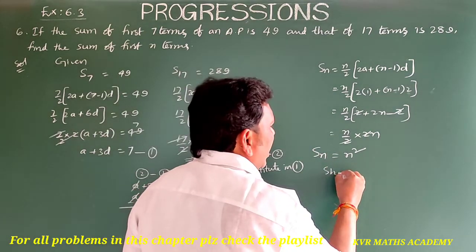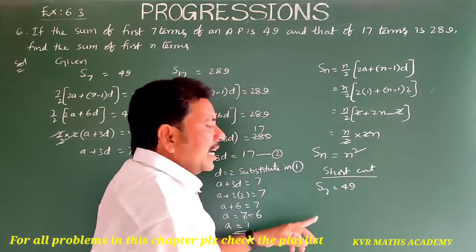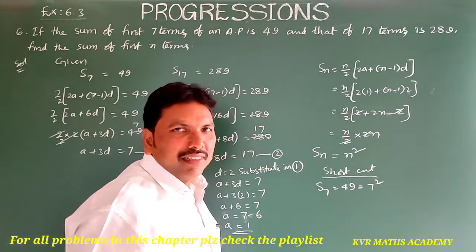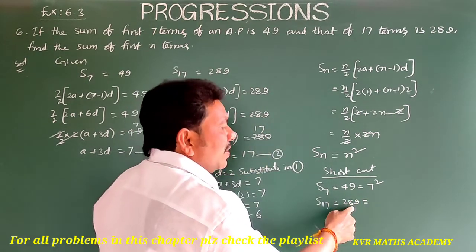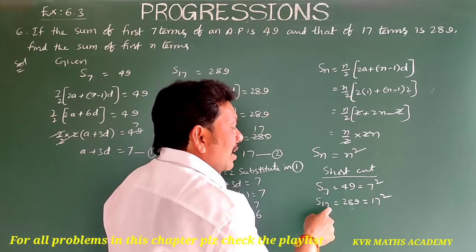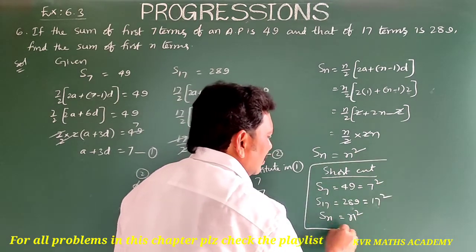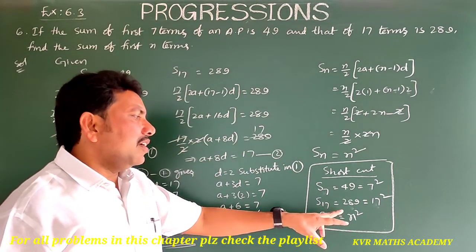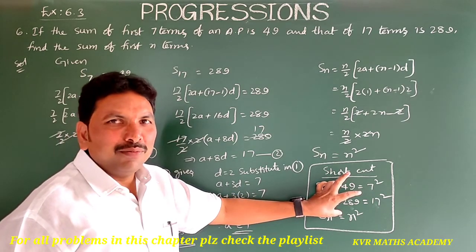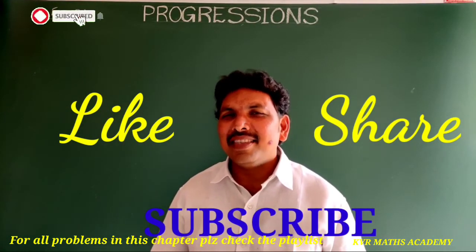Here is a simple shortcut: S7 = 49 = 7², and S17 = 289 = 17². So Sn = n². For a four-mark problem we use the full method, but for saving time we can use this shortcut. If you like my video please like and share, and don't forget to subscribe. Thank you very much.